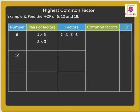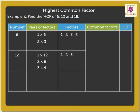The pairs of factors of number 12 are: 1 × 12 = 12, 2 × 6 = 12, and 3 × 4 = 12. Thus the factors of 12 are 1, 2, 3, 4, 6, and 12.